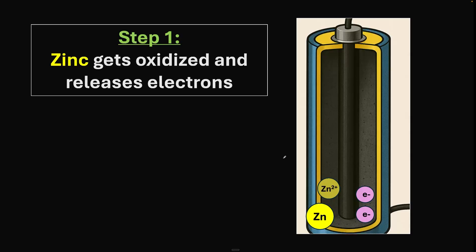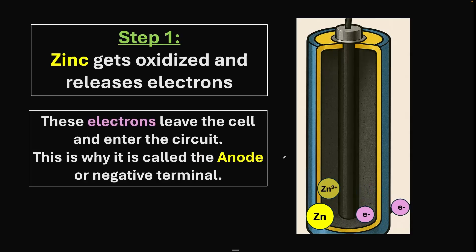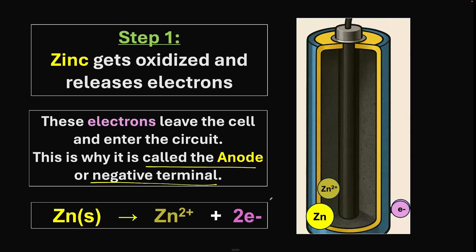What happens to these electrons? Do they go into the electrolyte and react with manganese dioxide? No. The electrons actually travel through the circuit. They leave the battery and enter the circuit. That's why this zinc casing is the anode or negative terminal. The reaction is: Zn solid gives Zn²⁺ ion plus two electrons.